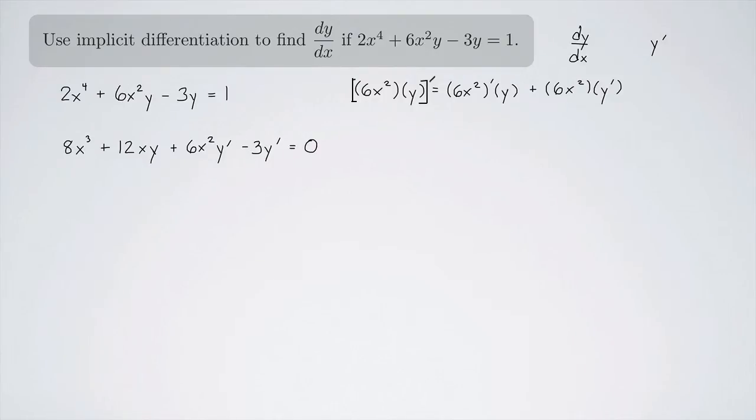What you would do is isolate these terms on one side of the equation and move everything else over to the other side. So if I add the 3y prime over, then I'll get 3y prime. And if I subtract the 6x^2y prime, I'll have that on the other side.